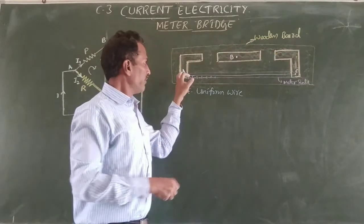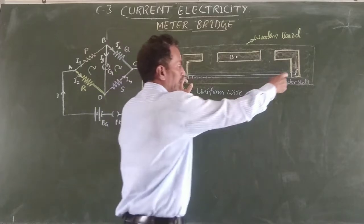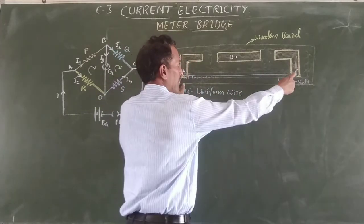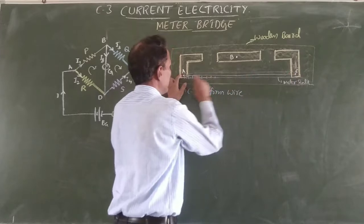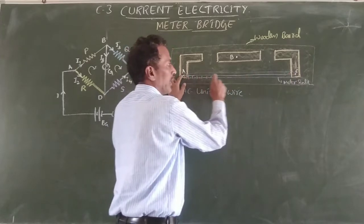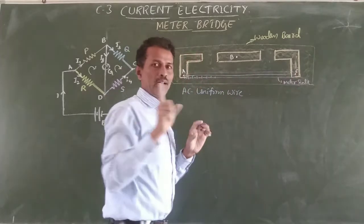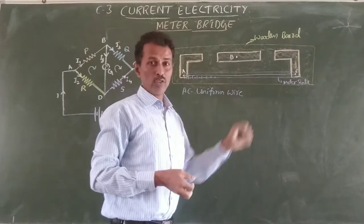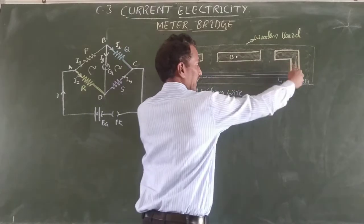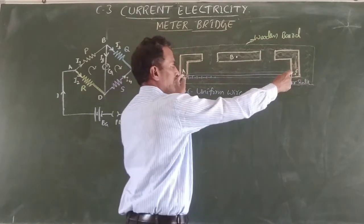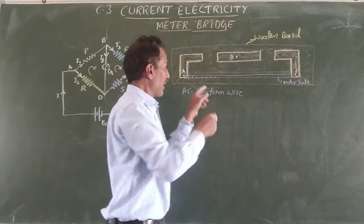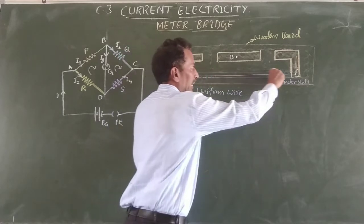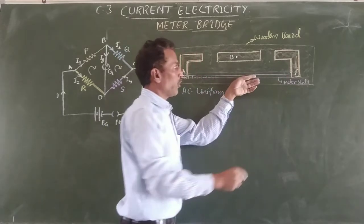A uniform wire of length 1 meter is stretched tight and fixed to the points A and C. A meter scale in purple color is fixed below the wire.